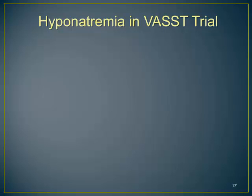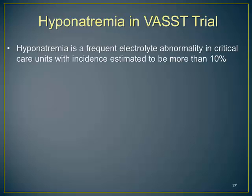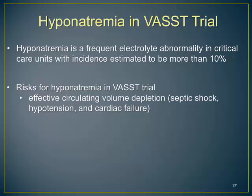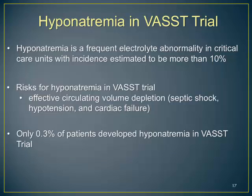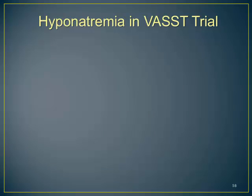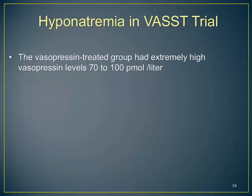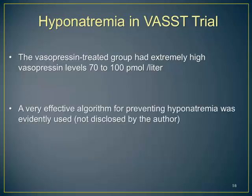Hyponatremia in the VAS trial is an often-overlooked subject. Hyponatremia is a frequent electrolyte abnormality with a reported incidence of around 10%, and risk in the VAS trial population is particularly high given relative volume depletion, hypotension, and cardiac failure. Interestingly, only 0.3% of patients — one out of approximately 400 receiving vasopressin — developed hyponatremia, despite vasopressin-treated patients having extremely high vasopressin levels of 70–100 pg/mL versus a normal level of less than 10. Why this occurred is unknown; apparently a very effective method of preventing hyponatremia was used by the authors but was never disclosed, and this may be a confounding factor.